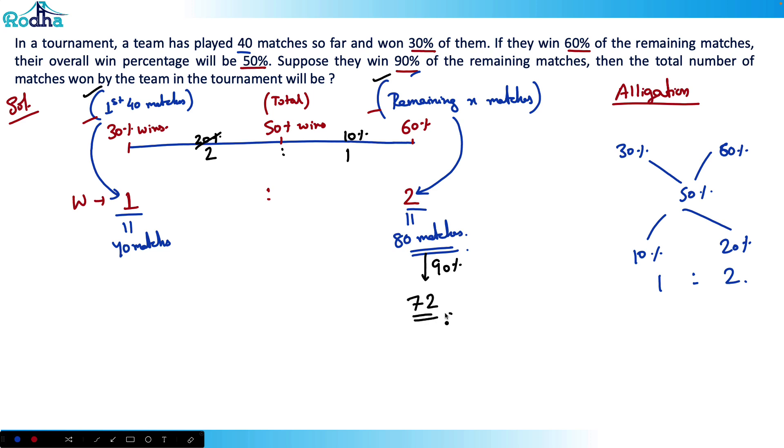90% will be equal to 72. So total, I need to calculate total wins here. What are total wins? Total wins is equal to in the first 40 matches they won 30%, so that is 12. 30% of 40 is equal to 12. And plus 72, that is equal to 84.